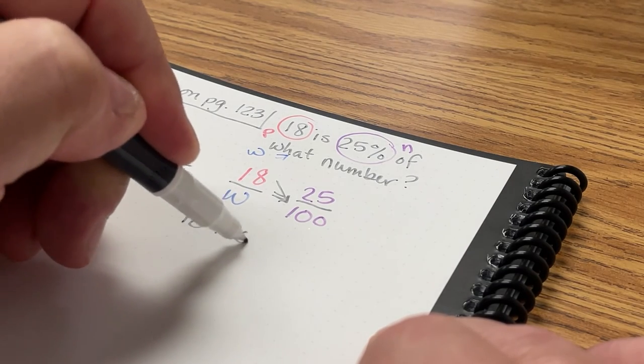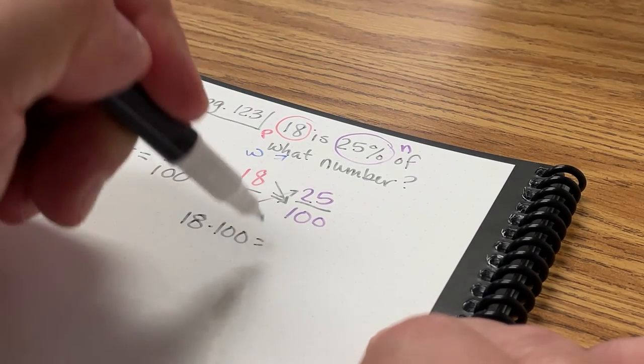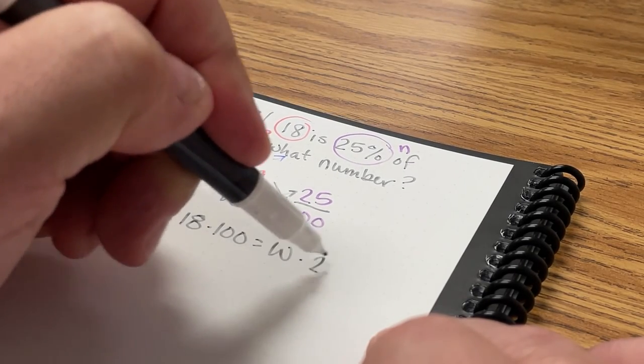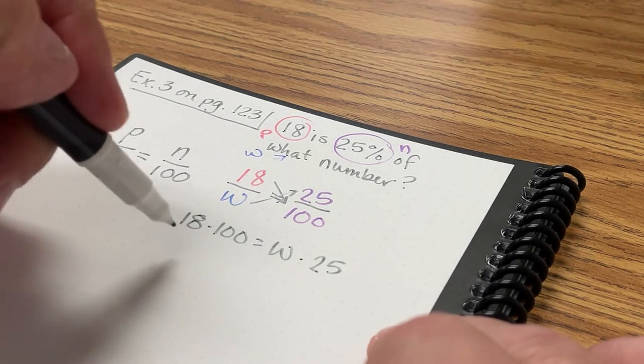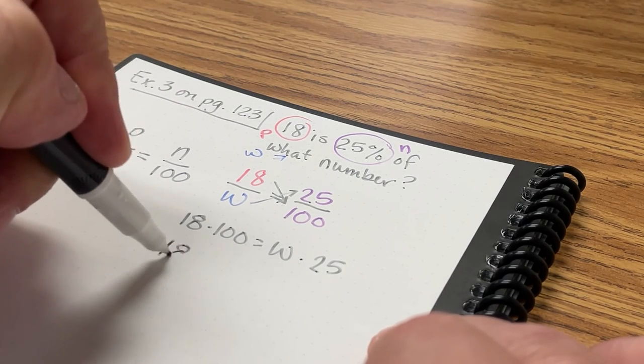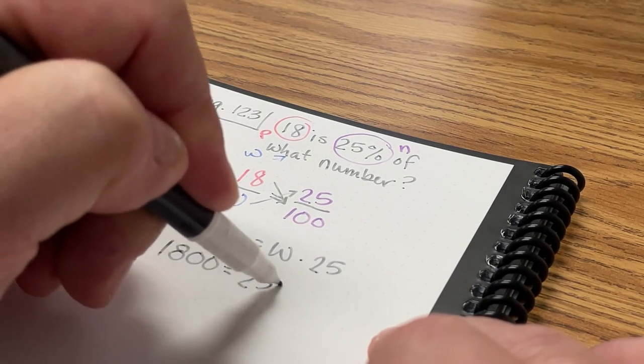18 times 100 equals W times 25. And now I'm going to simplify those. So I have 1800 equals 25W.